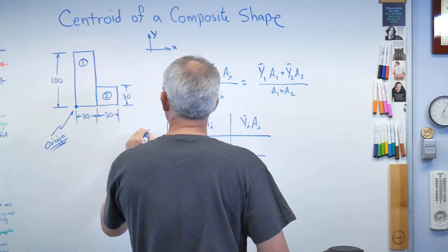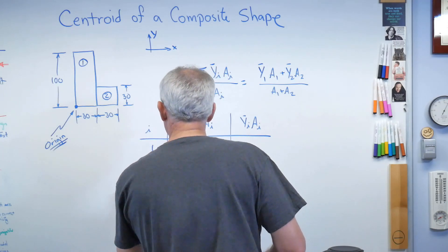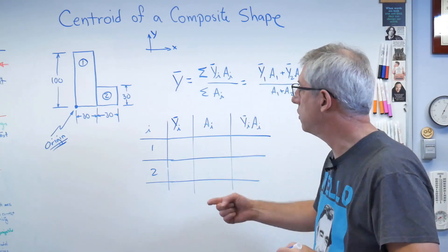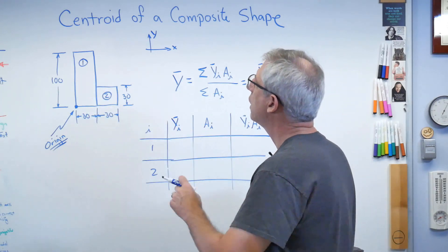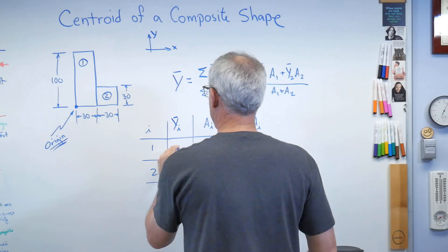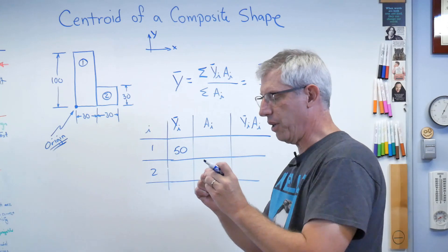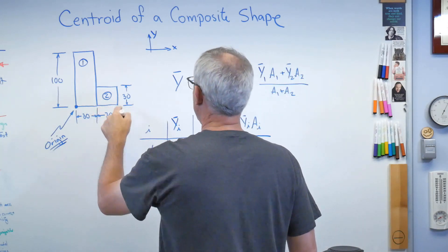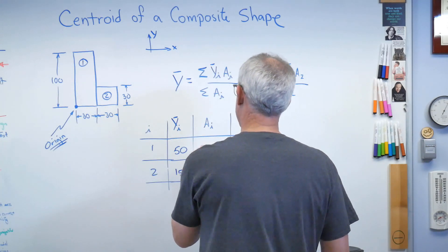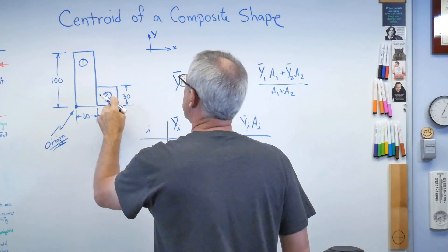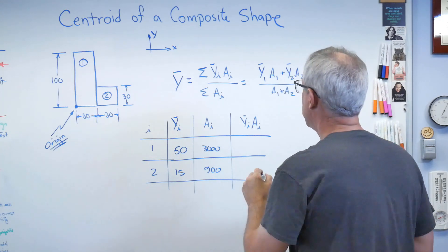So let's put rows 1 and 2. y-bar-i: since these are rectangles, it's easy to find where the vertical centroid is. For box one, it's halfway up, so it's going to be 50. For box number two, y-bar is going to be 15. Now these are all in millimeters, and the numbers are going to get pretty big because millimeters are really tiny.